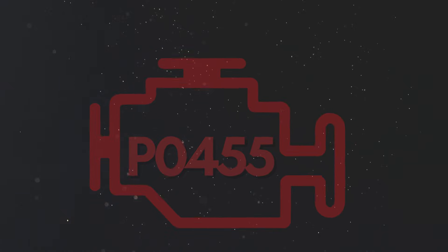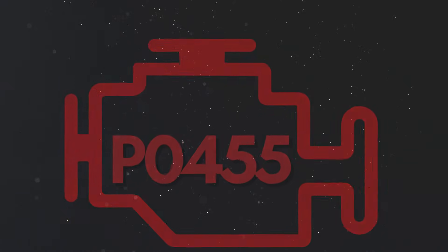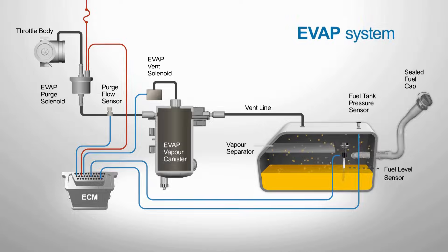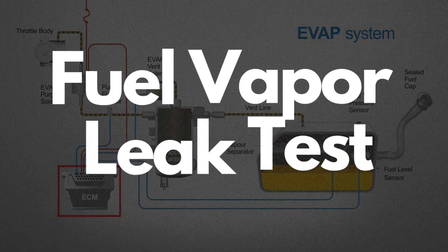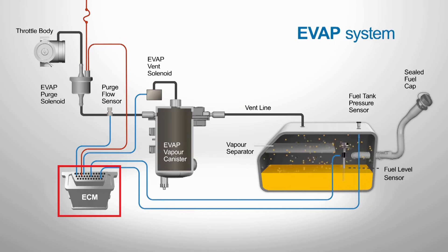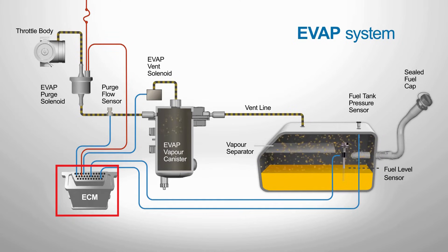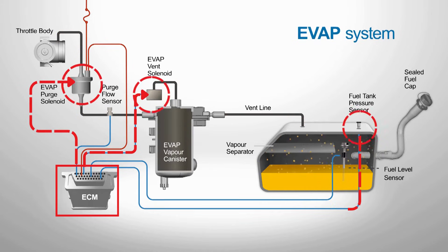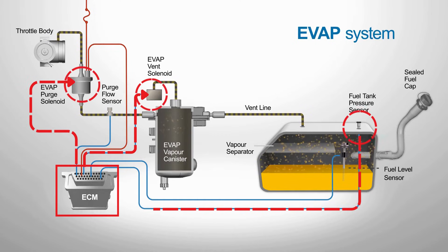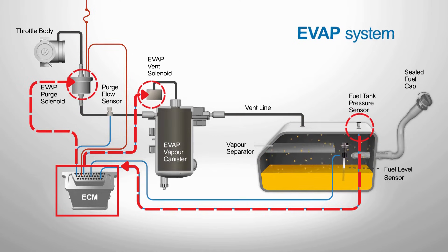Now let's look at why P0455 gets triggered. To ensure that the EVAP system is functioning properly, the ECU performs routine fuel vapor leak tests. These tests can happen when your vehicle is parked or while it's running. The ECM sends a signal to close the vent valve and the purge control valve. This seals the system and allows the ECM to monitor it for any pressure changes if the car is parked, or vacuum loss if the car is running.